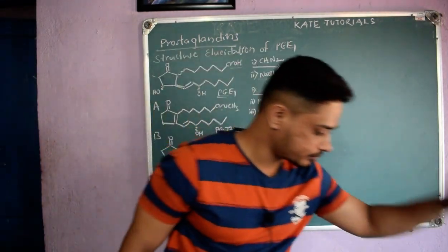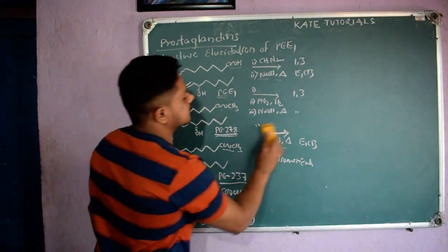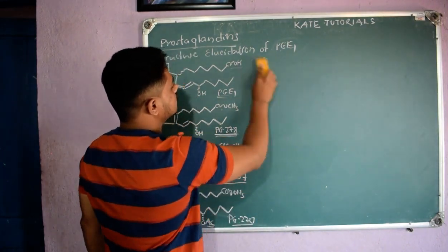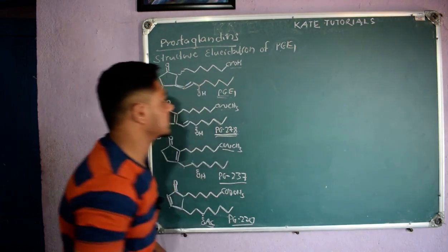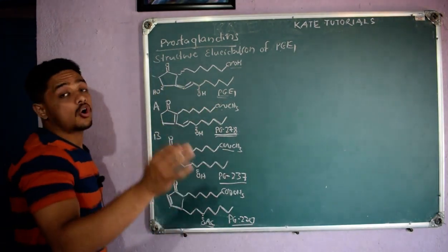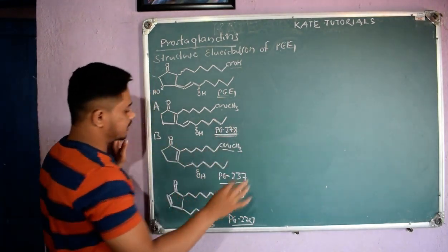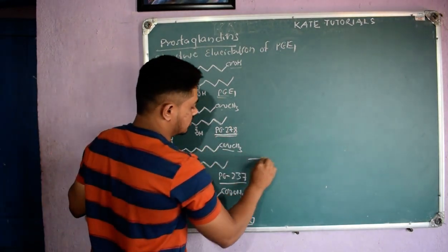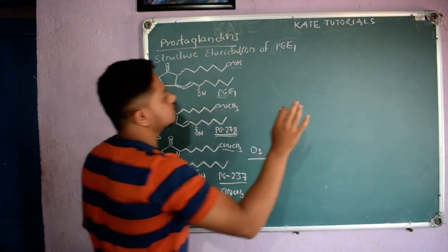That is all the story we discussed so far. In the next step, we do ozone analysis. Let us do this with compound B, that is PG237. In simple ozonolysis, when we add O₃ it will break the pi bond.